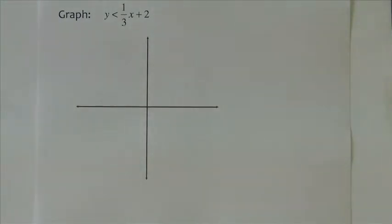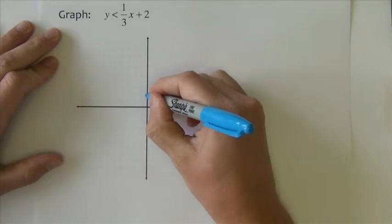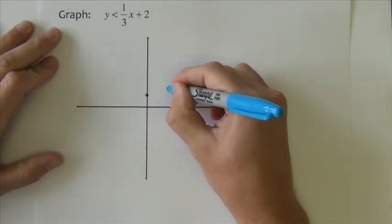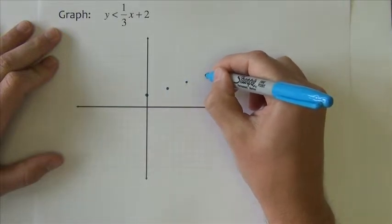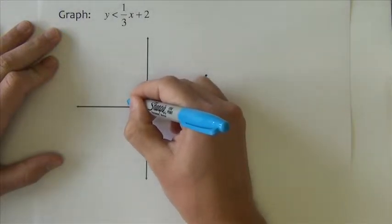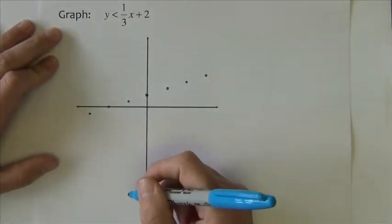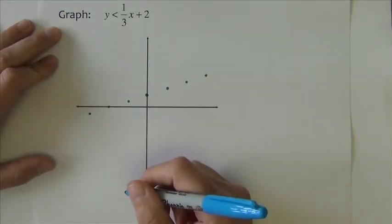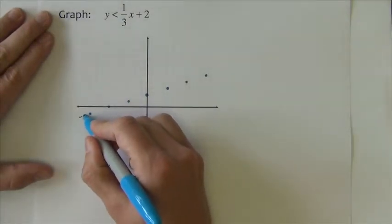Next one we're graphing is y is less than 1/3 x plus 2. First we're going to plot out the points, start at 2 on the y-axis. 1/3 slope means going up 1 into the right 3, could also come down into the left 3. This inequality does not have an equal to, so this is going to be a dashed line to connect them.